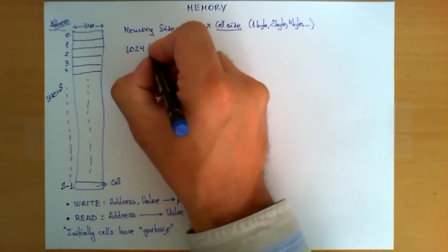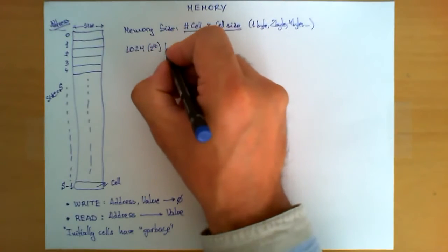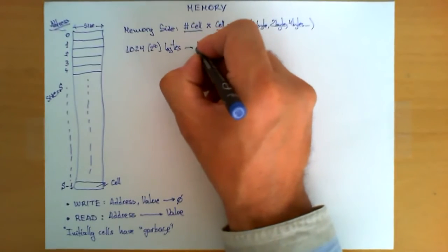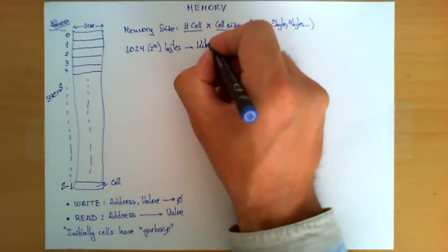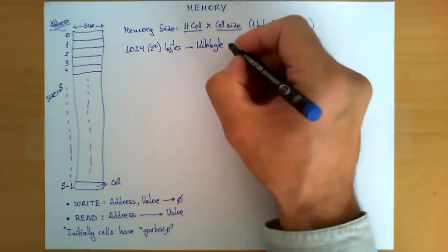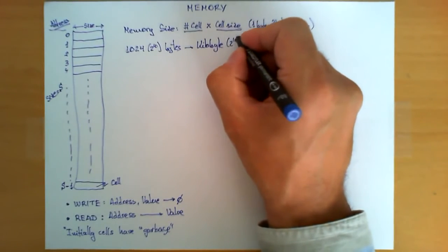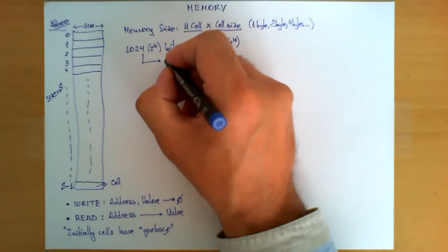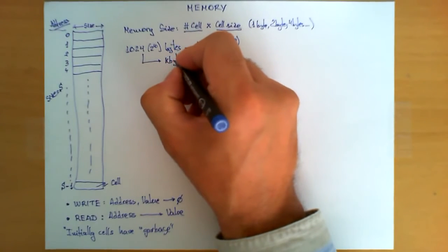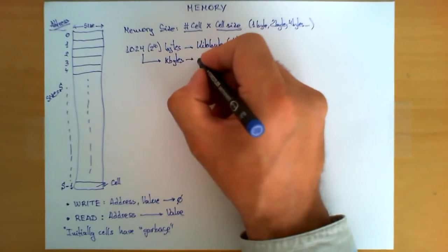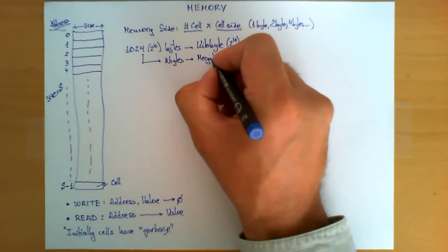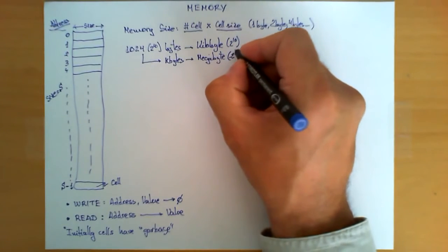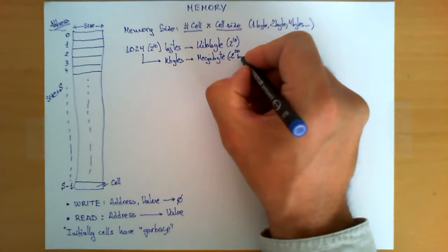But when we have 1024, which is 2 to the 10 bytes, that unit we call a kilobyte. In other words, 2 to the 10 bytes. When we have 1024 kilobytes, that unit we call 1 megabyte, or if you do the math, 2 to the 20 bytes.